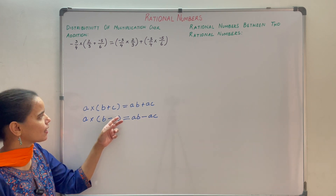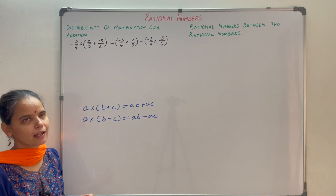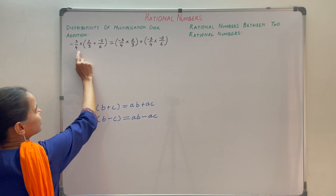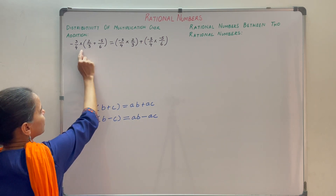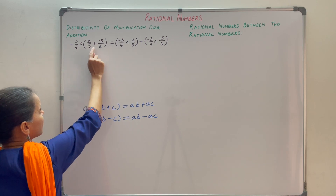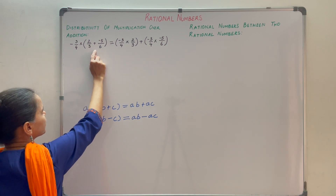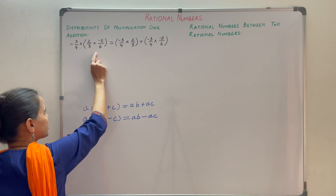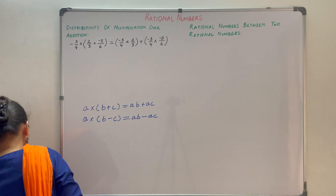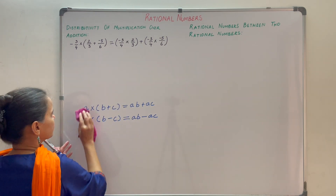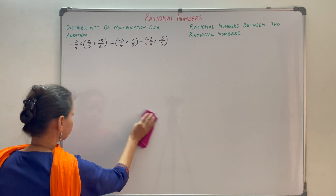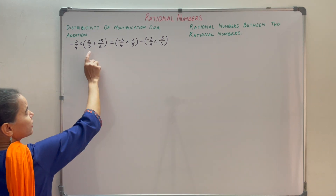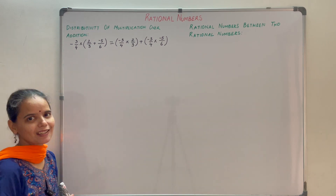Now let us understand distributive property with the help of a question. You can clearly see there are three rational numbers, with multiplication and addition, so this is the distributive property of multiplication over addition. Let us solve the left-hand side first, then the right-hand side, and see whether they are equal.